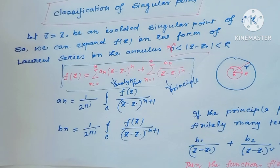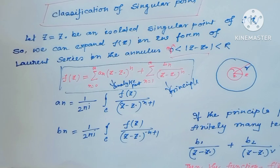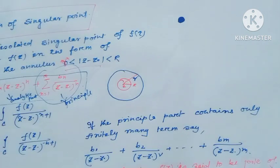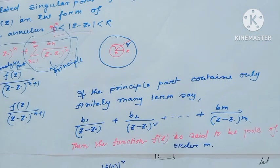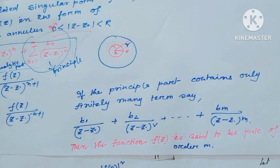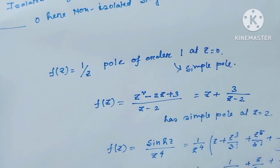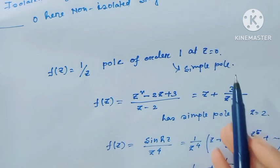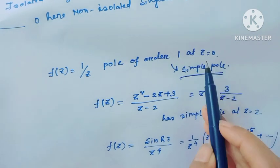The coefficients are: a_n = (1/2πi) ∮ f(z)/(z − z-naught)^(n+1) dz and b_n = (1/2πi) ∮ f(z)/(z − z-naught)^(−n+1) dz. When the principal part contains only finitely many terms, the function f(z) is said to have a pole of order m. For example, f(z) = 1/z: here b₁ = 1, and this is a pole of order 1 — when the pole is of order 1, it is called a simple pole at z = 0.